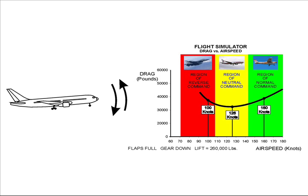The demonstration compares the approach speed pitch response for three classes of aircraft: light airplanes in the normal command region, jet transports in the neutral command region, and jet fighters in the reverse command region. As in the first three demonstrations, the corrections made are approximately three times the normal values in order to clearly show differences in the methods being examined.